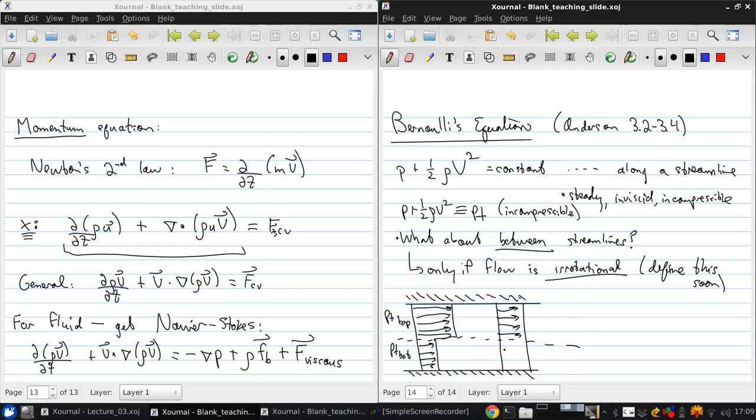And here's another velocity profile that's uniform. And on the left, pt top does not equal pt bottom. And on the right, pt top does equal pt bottom. And this has to do with whether the flow is irrotational or not. And we'll discuss this more next time and in class.